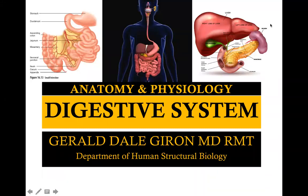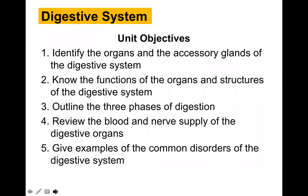Good day, everyone. I'm Dr. Jarod El-Hiron from the Department of Human Structural Biology, and we're here to discuss the anatomy and physiology of the digestive system. Our learning outcomes are to identify the organs and accessory glands of the digestive system, to know the functions of each organ and the structures of the digestive system, to outline the phases of digestion, to review the blood and nerve supply, and to give examples of the common disorders of the digestive system.